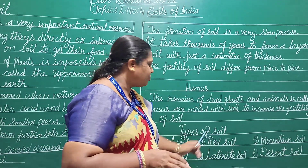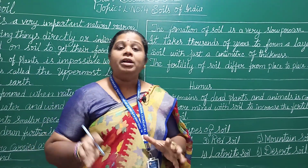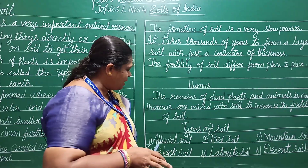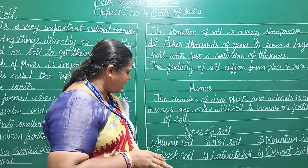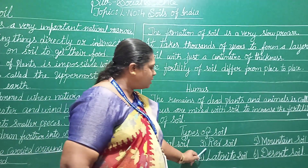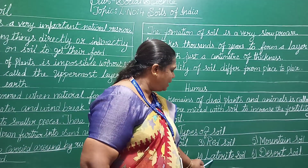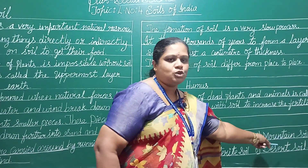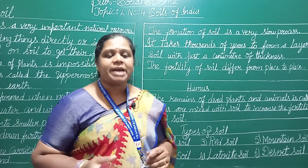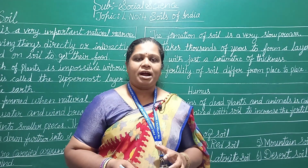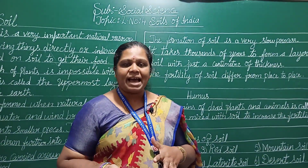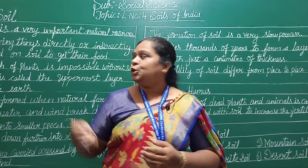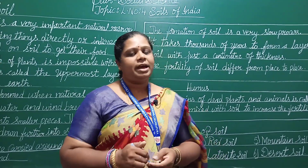Soils are divided into many types. The first one is alluvial soil, second one black soil, third one red soil, fourth one laterite soil, fifth one mountain soil, sixth one desert soil. There are six types of soil. In the next class, I will be teaching about types of soil one by one. I hope you all have understood this. Thank you.